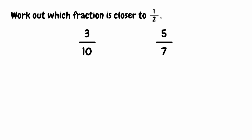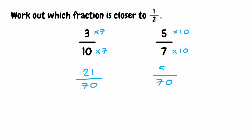For the last question, we want to figure out which fraction is closest to a half. We've been given 3 tenths and 5 sevenths. We look at the denominators and find the lowest common multiple of 10 and 7, which is 70. To get from 10 to 70 we multiply by 7, so 3 multiplied by 7 gives us 21. To get from 7 to 70 we multiply by 10, so 5 multiplied by 10 gives us 50.